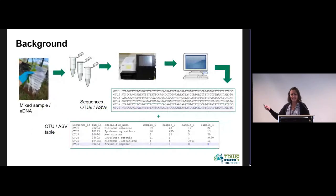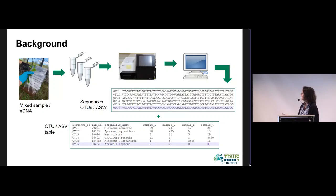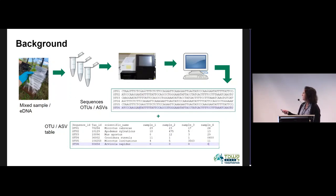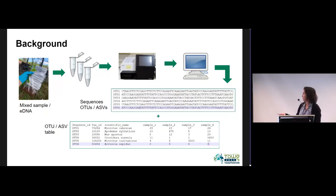Tobias already explained the pipeline from sample to sequences. To recap: we start with samples that are amplified for a specific marker, we generate raw reads from the sequencing machine, these go into bioinformatic processing, and then we have sequences corresponding to amplicon sequence variants — ASVs or OTUs. We then have an additional table, or these can be combined or split into three different tables, containing the taxonomic identification of those sequences and their occurrence across the different samples included in the analysis.